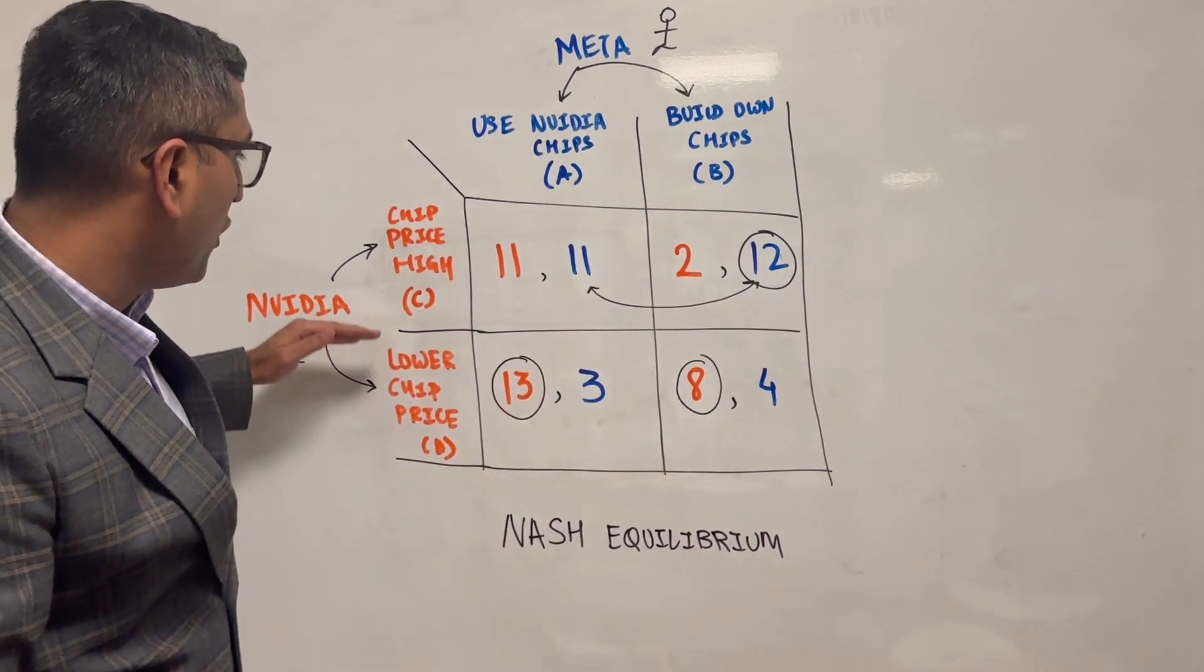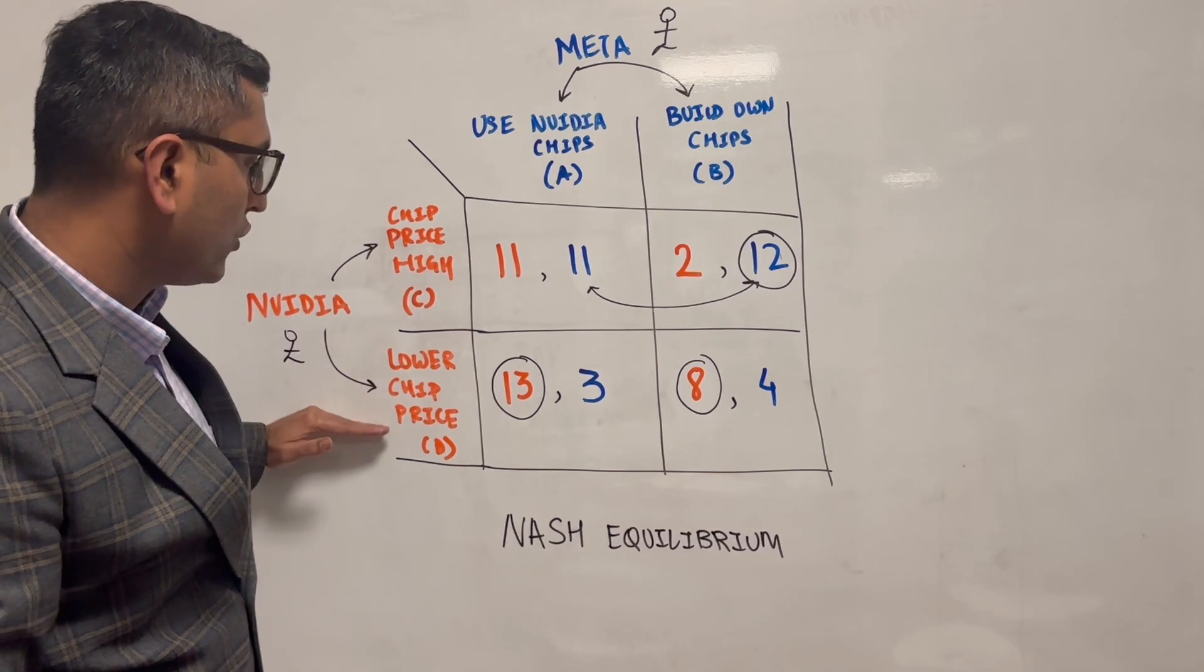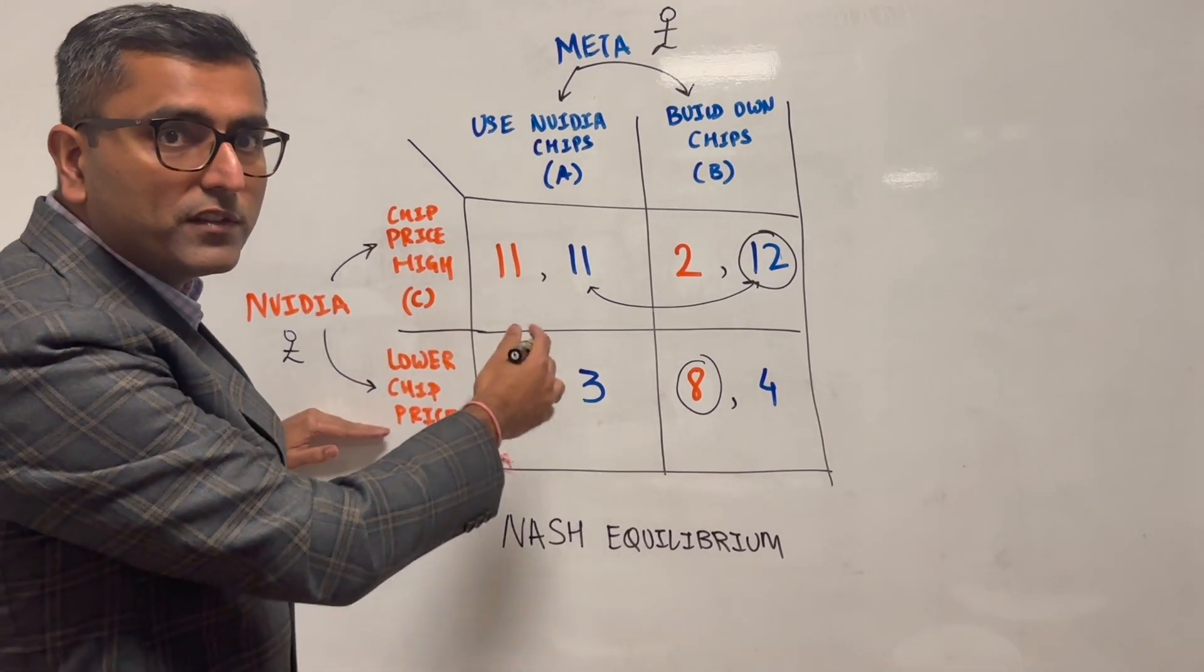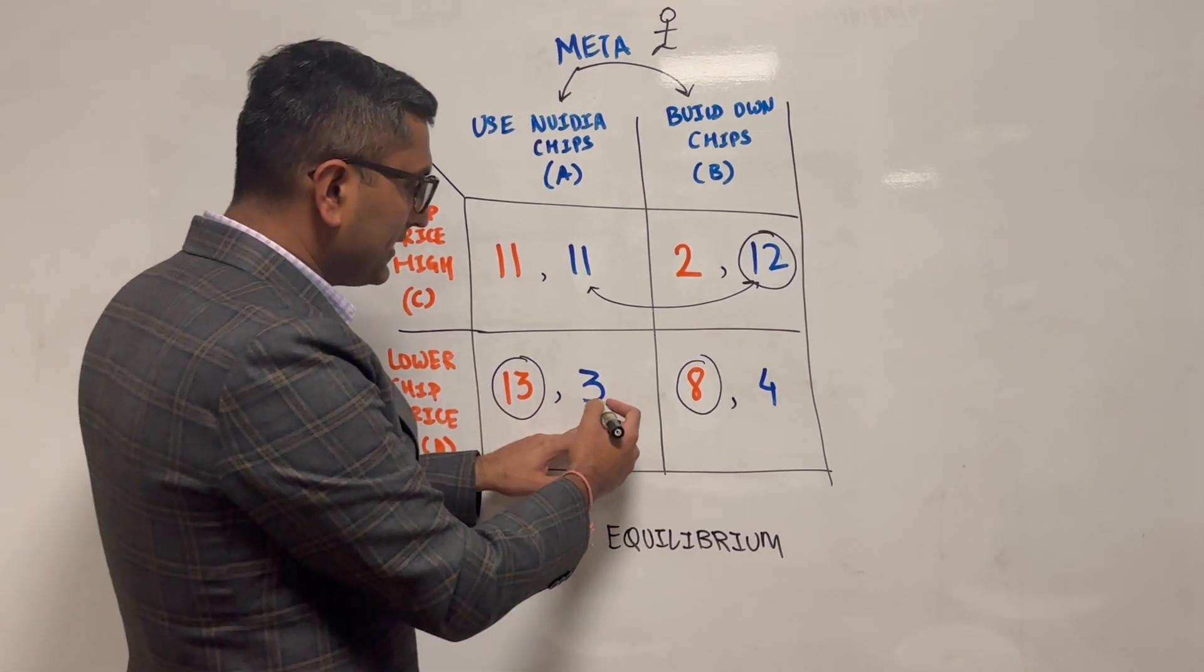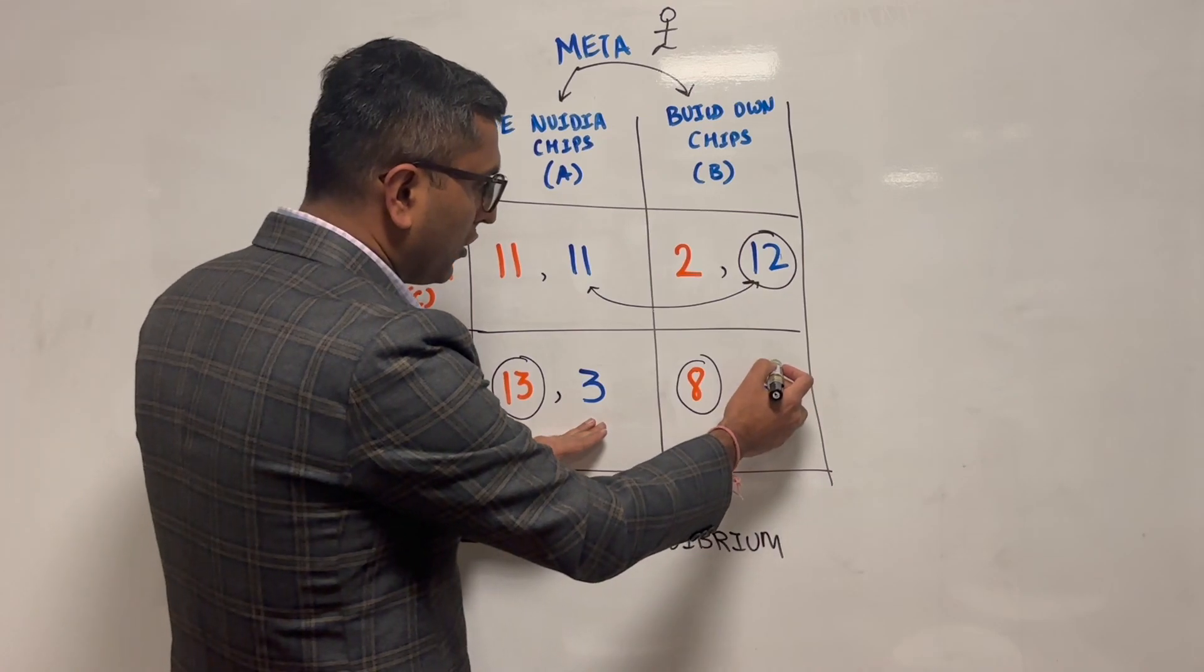Similarly, then they'll assume, okay, now what if Nvidia decides choice D? Because they don't know each other's choices at this point. If Nvidia decides choice D, then they're going to compare their payoffs and say, oh, 3 versus 4, I'm going to go with this.